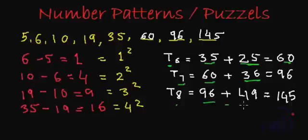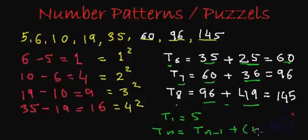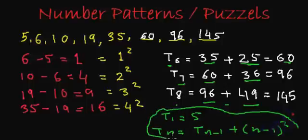So I think we can write the generalized formula for this pattern. That will be T1 is fixed, which is 5, and the nth term can be found out by adding its previous term to the square of its previous place, which is n minus 1. So the nth term is actually equal to T(n-1) plus the square of n minus 1. So this is the generalized method or the generalized form of the number pattern which was given to us.